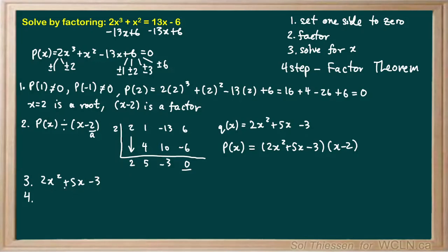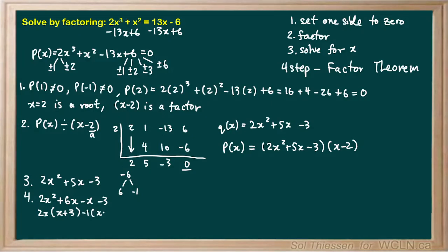This quadratic is a messy trinomial, so we can't apply the fast factoring method. We need the product of the leading coefficient and the constant term, which is negative 6. We're looking for two numbers that multiply to negative 6 and add to positive 5 — those are 6 and negative 1. We split the x-term into 6x and minus x, giving 2x squared plus 6x minus x minus 3, then factor by grouping: from the left pair we pull 2x leaving x plus 3, and from the right pair we pull negative 1, again leaving x plus 3. The brackets match, so we write the factored form as 2x minus 1 times x plus 3.